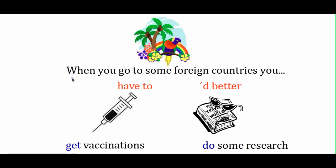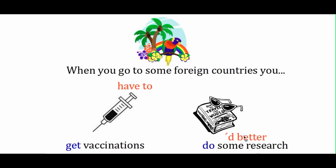Now the last example: when you go to some foreign countries, you have to — a modal of obligation — or you'd better — a modal of suggestion. Options: get vaccinations, and do some research. Doing research is definitely a good idea, but it's not an obligation — you can travel without doing any research. So: 'When you go to some foreign countries, you'd better do some research.' But vaccinations: some countries won't let you in unless you have proof of certain vaccinations — that is an obligation: 'You have to get vaccinations.'